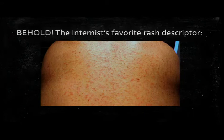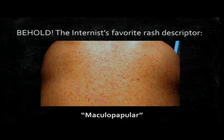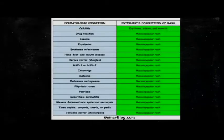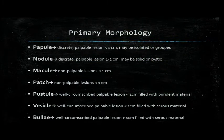Let's start. How would you all describe this rash? As interns we often just call it a blanket statement, and gomerblog.com has even made fun of us for saying the same thing. But seriously, let's start with primary morphology. By primary we mean the rash type — the lesion as it first originates before any external changes are applied to it.